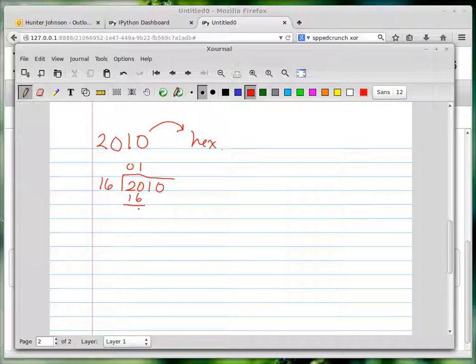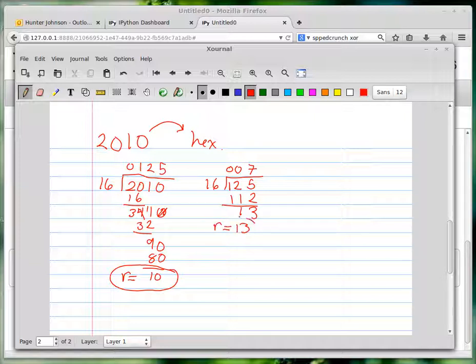How many times does 16 go into 2010? It goes into 41 two times, which is 32. That gives you 90. It goes into 90 five times. 5×16 is 80, and you have a remainder of 10. The remainders are what give you the hex digits. I take 125 and send 16 into 125. It goes into 125 seven times. This gives you 12, and you bring down the numbers and you get a remainder of 13. Now you take 16 into 7. It goes into 7 zero times with a remainder of 7.